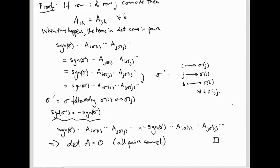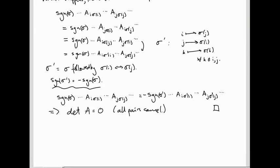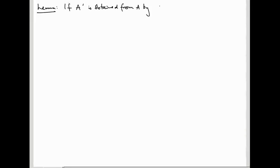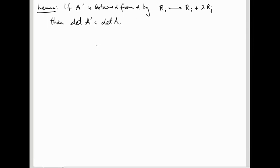So if two rows coincide the determinant is zero. This allows us to prove the first really crucial property: how the determinant changes under row operations. If A' is obtained from A by the row operation ri → ri + λ·rj, then det(A') = det(A). This is incredibly useful because we can perform these type-one row operations without changing the determinant.